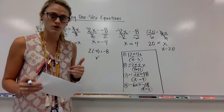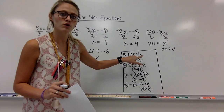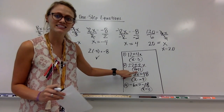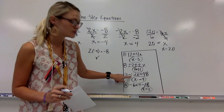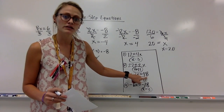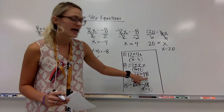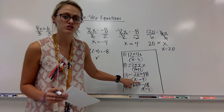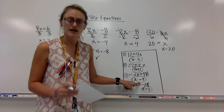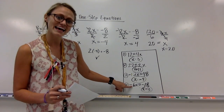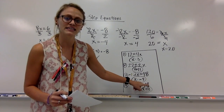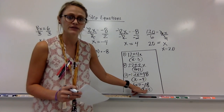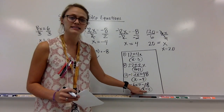You should have completed problems one through four. Number one: 12 equals 4x — x equals 3, since 12 divided by 4 is 3. Number two: 22 equals 2x — divided by 2, x equals positive 11. Number three: negative 12x equals 48 — you should have divided by negative 12. A positive divided by a negative is negative 4. If you put positive 4, it is wrong — got to be careful with your signs. Number four: negative 6x equals negative 18 — a negative divided by a negative is positive 3. If you put negative 3, it is wrong. Negative divided by negative is positive.